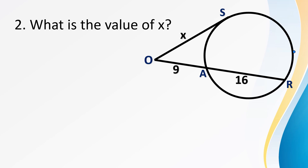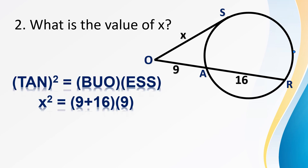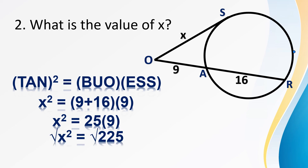Number 2: what is the value of X? The tangent line is missing, so the tangent is X. X squared equals the full secant segment length of 16 plus 9, times the external part OA which is 9. So 9 plus 16 is 25, times 9 equals 225. To remove the exponent, get the square root of both sides. X equals 15. Substituting back: X squared is 225, which equals the full secant segment times its external secant segment.